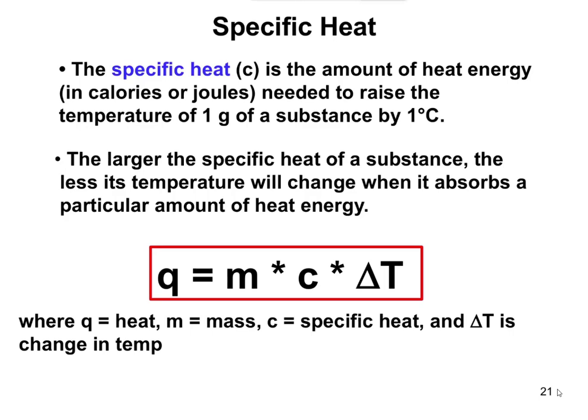The specific heat of something refers to how much energy it takes to raise the temperature of one gram of whatever it is you're talking about by a degree Celsius.